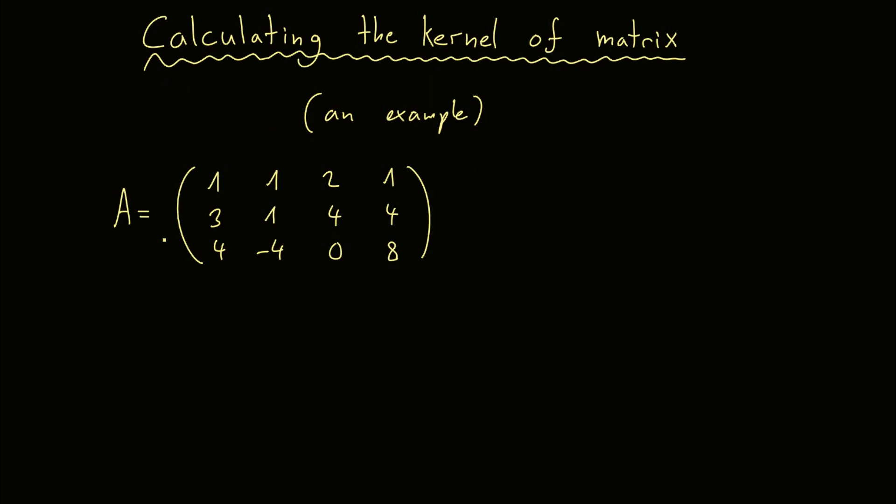This is the matrix we will consider here. We will consider it over the real numbers. And as you can see, it has 3 rows, so 3 times 4, and 4 is the number of the columns here.